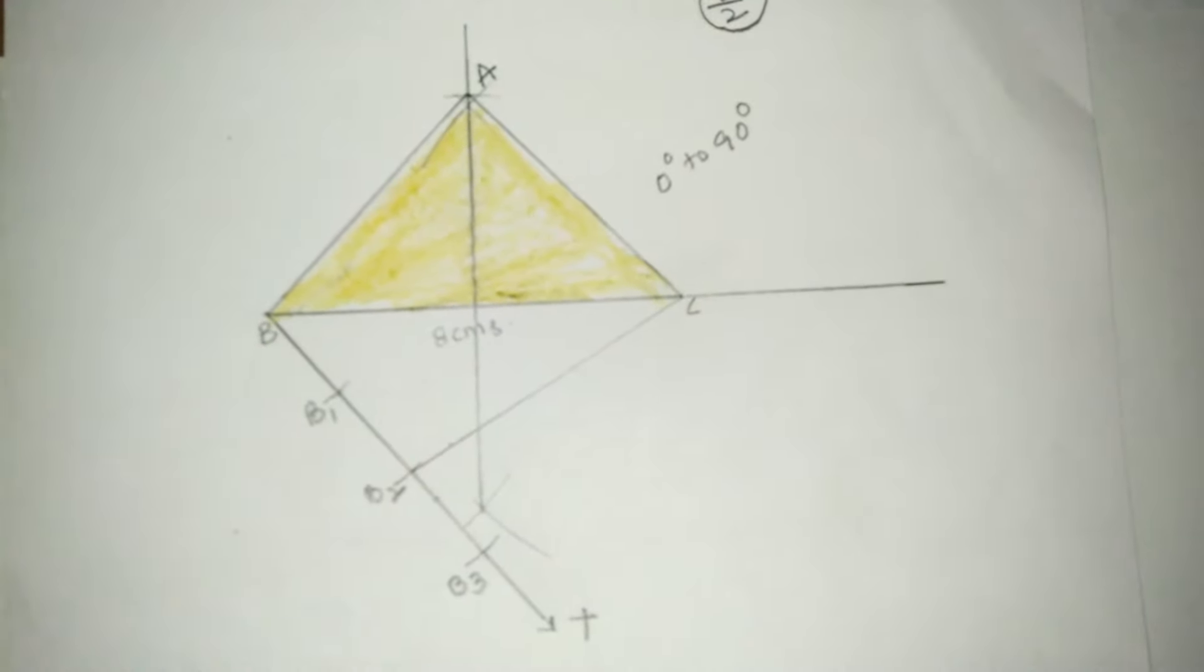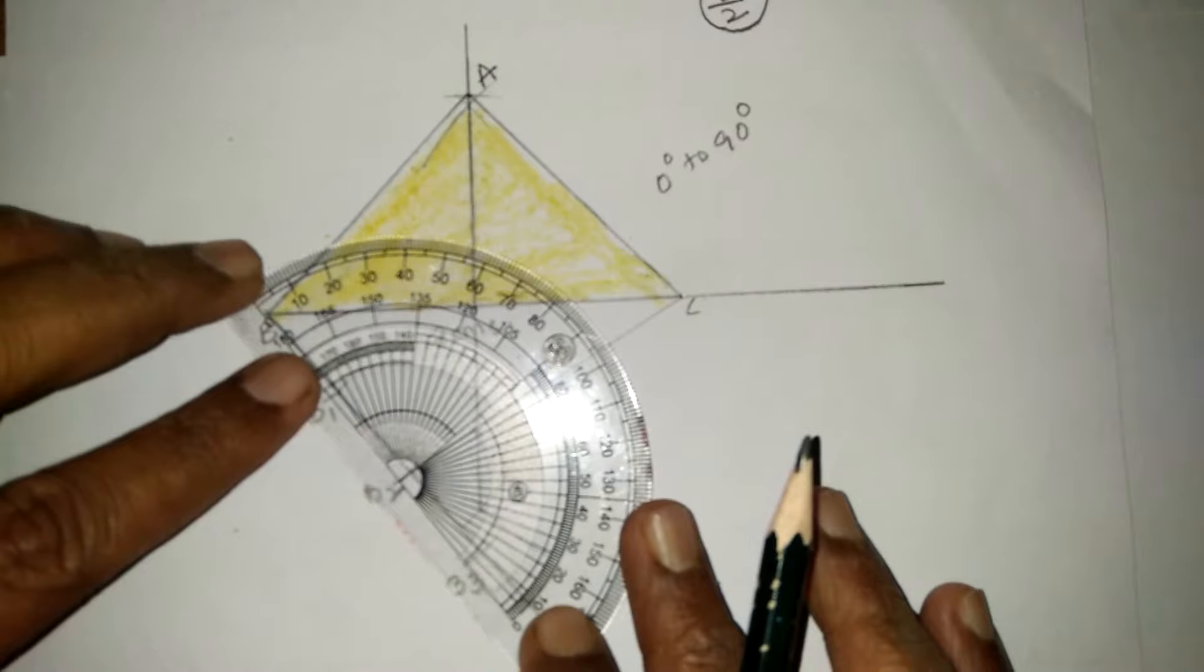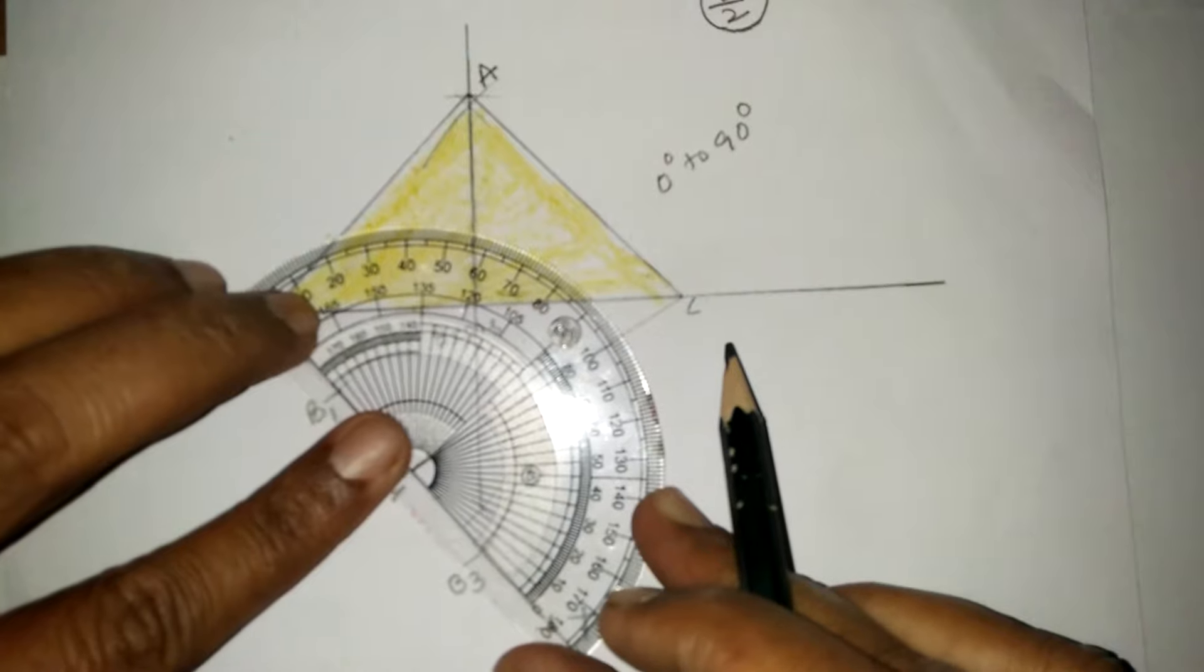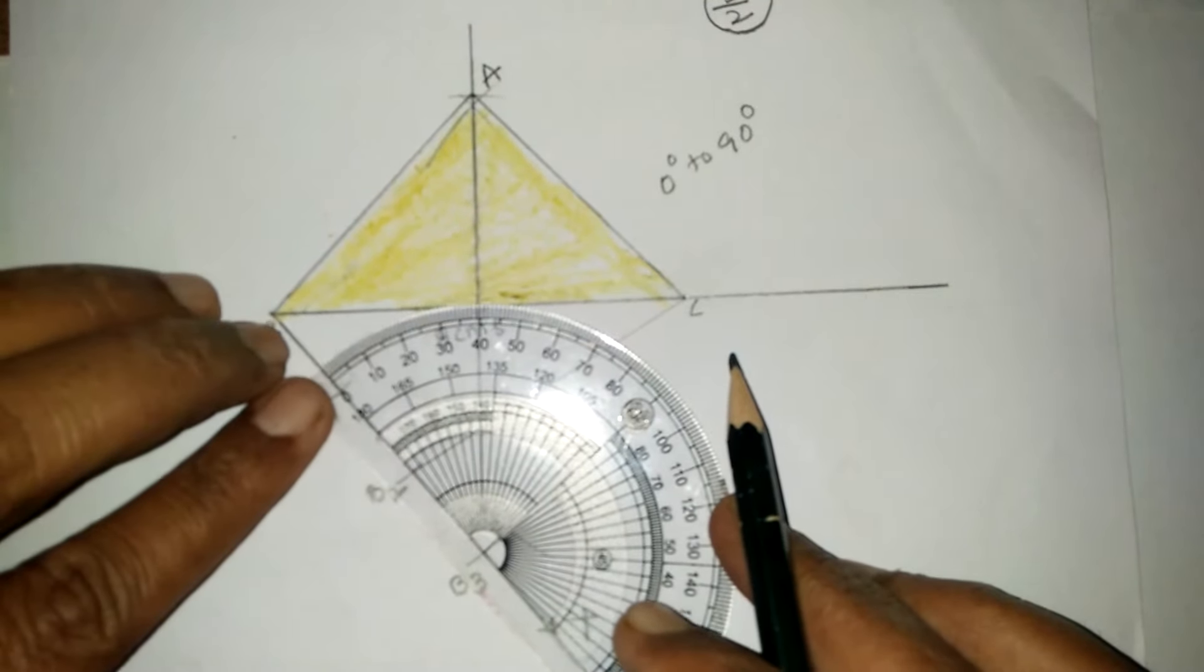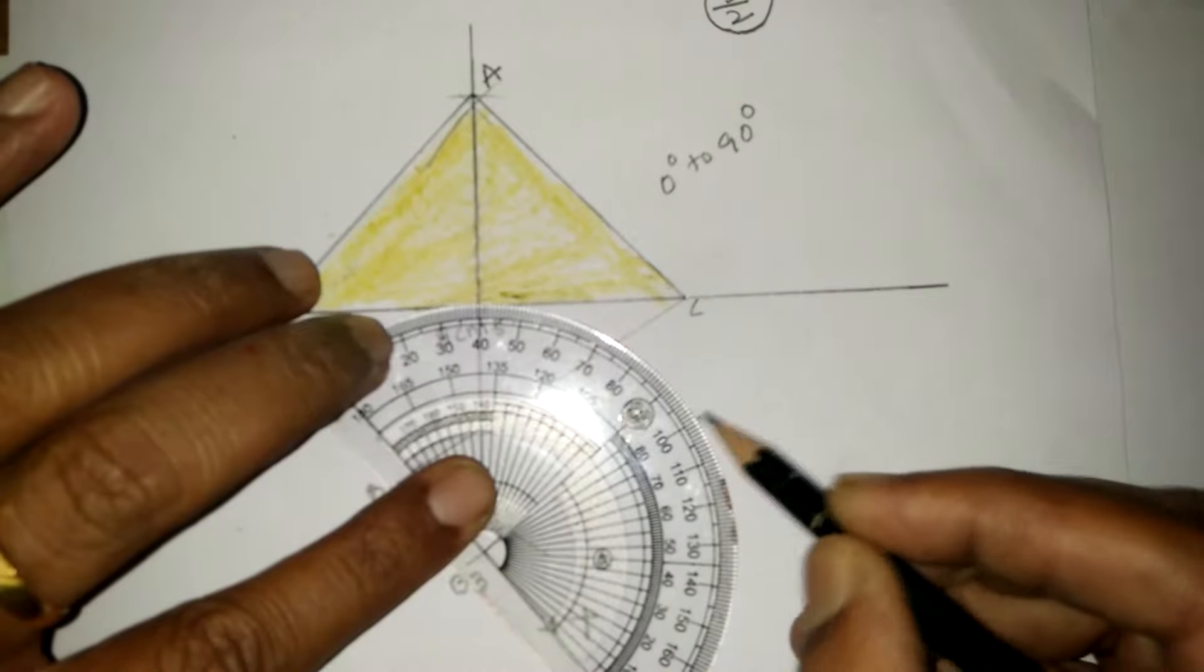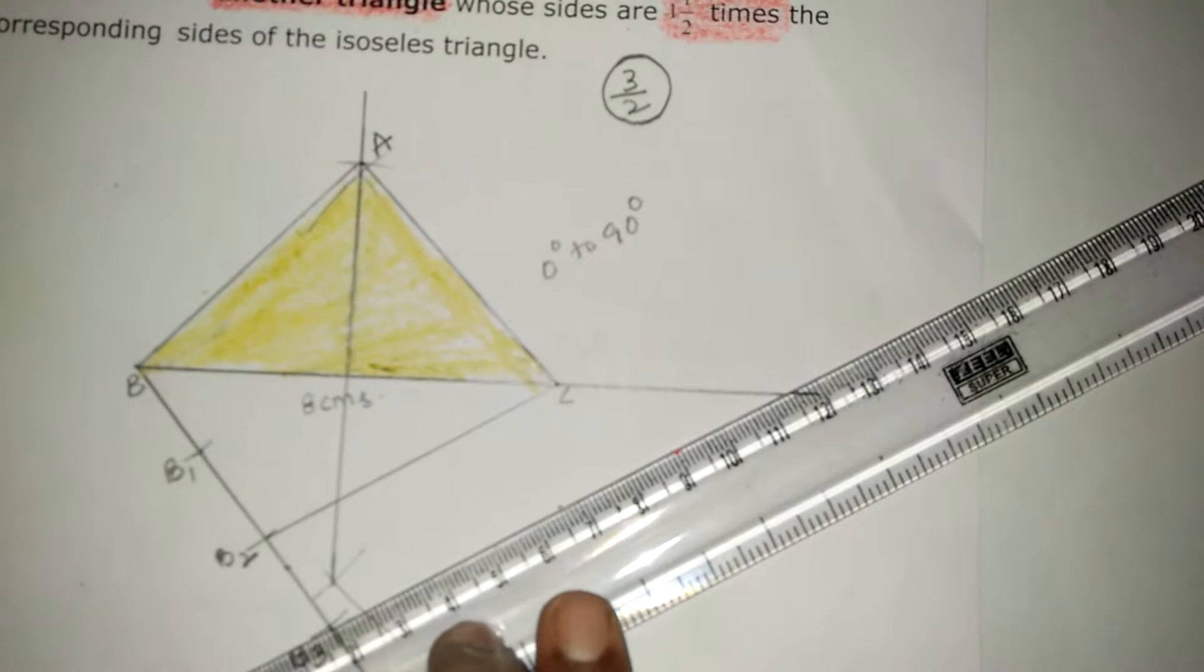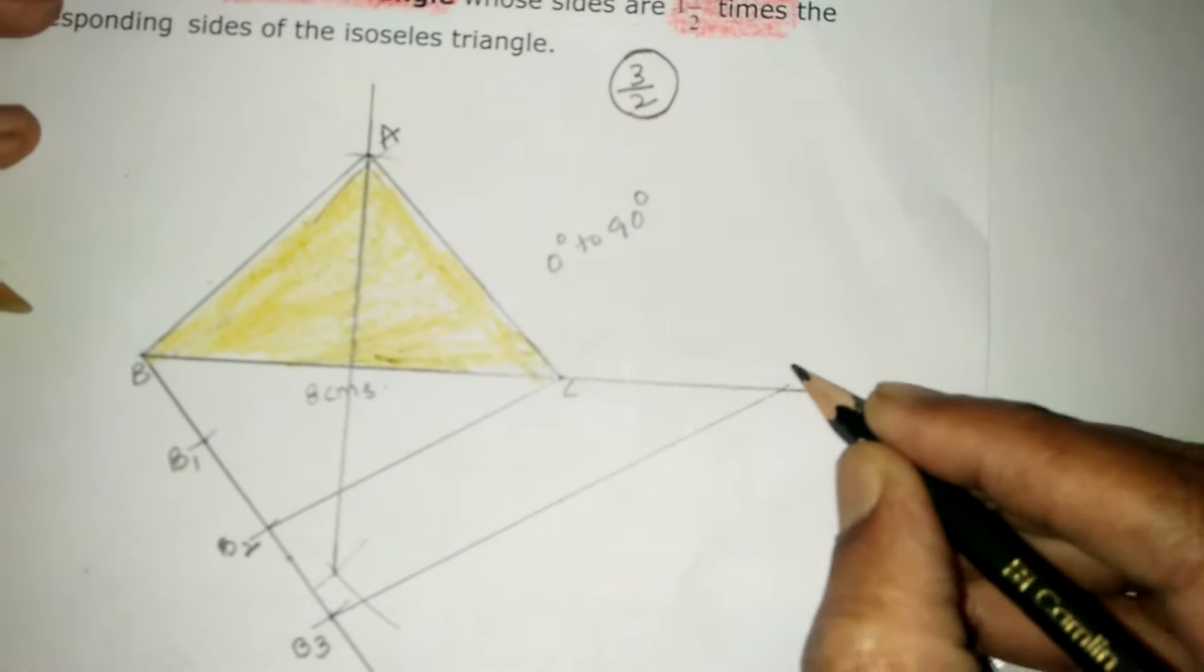Now, measure the angle B2C. It is exactly 80 degrees. From B3, you take 80 degrees. Now extend this line from B3. Name it C1.